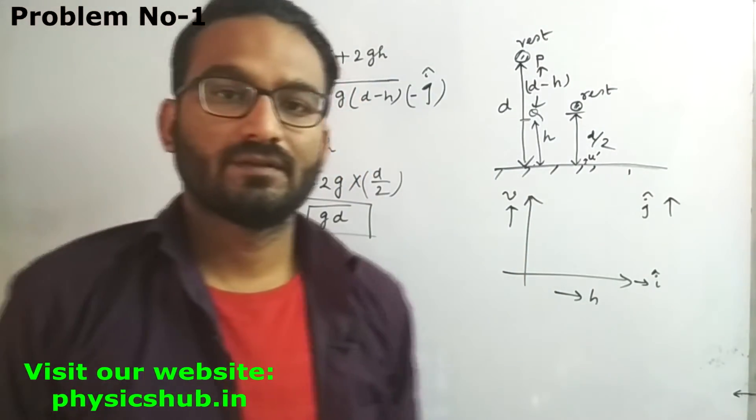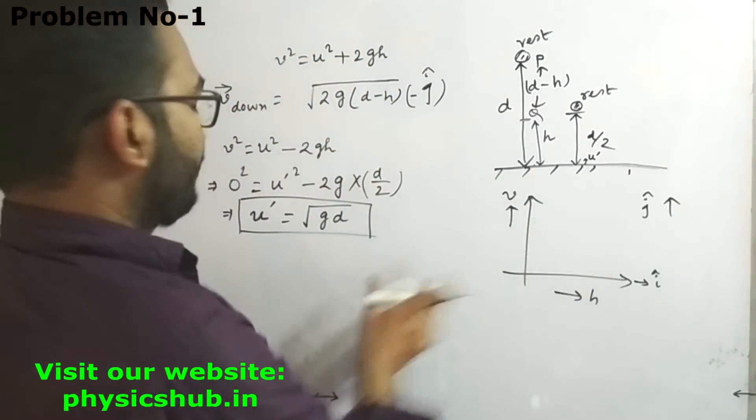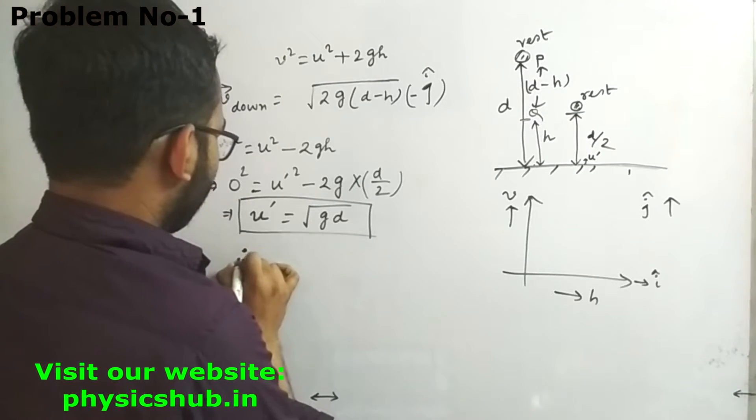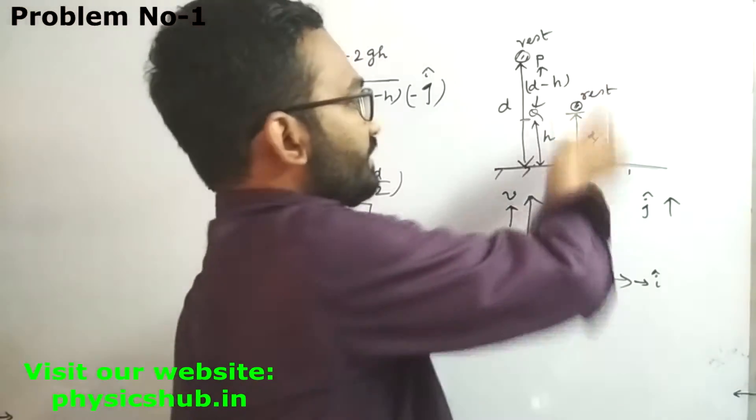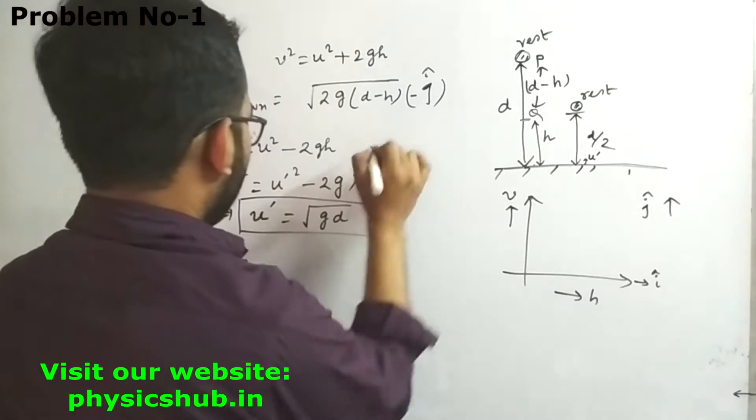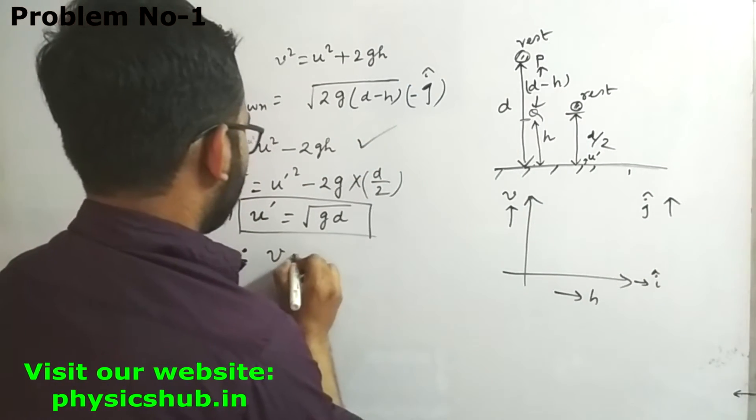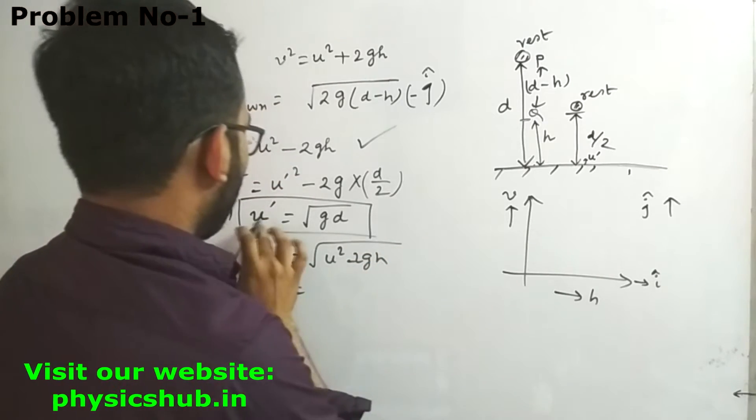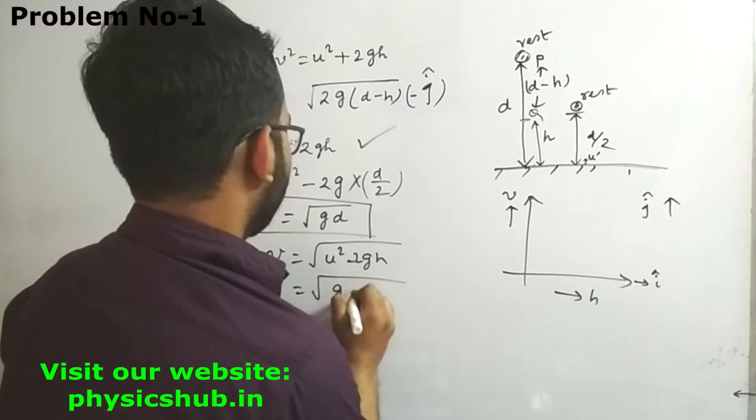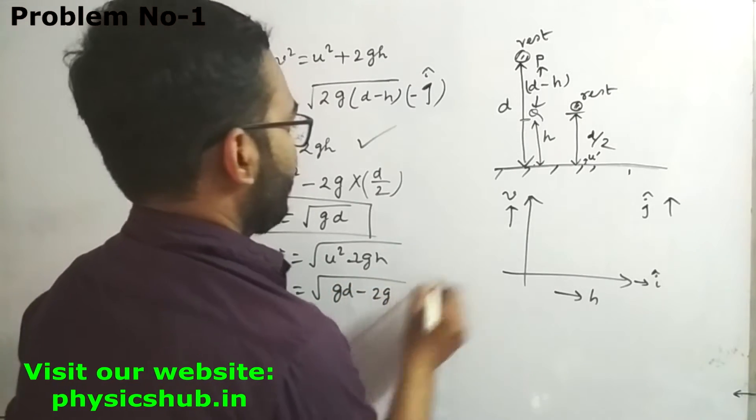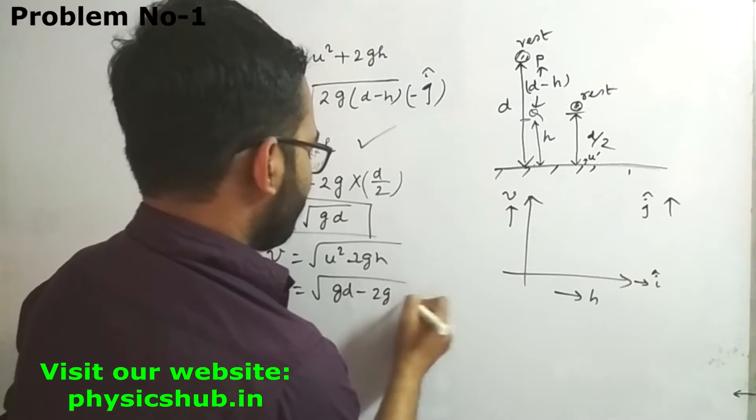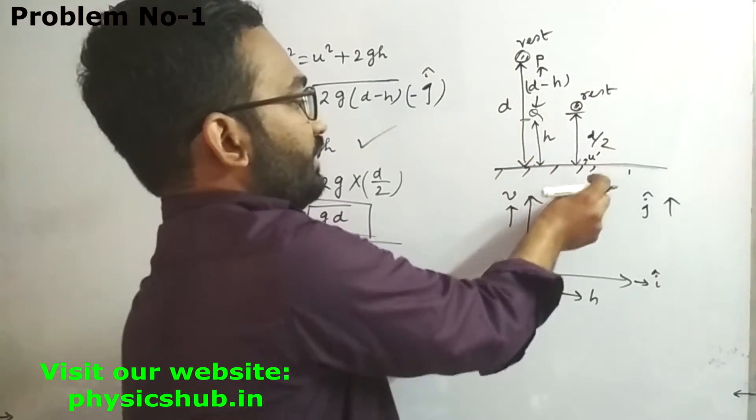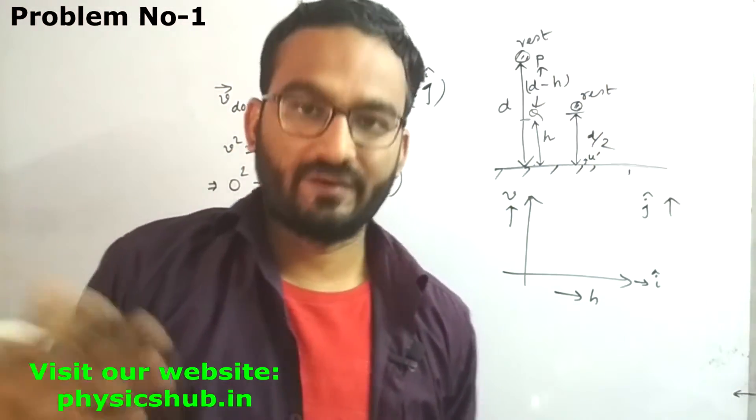For the upward journey, the velocity is v = √(u'² - 2gh). We have u' = √(gd), so v = √(gd - 2gh). When h = d/2, v = 0, confirming the ball is at rest at height d/2.